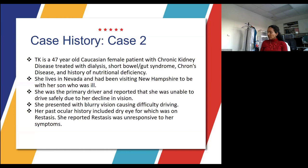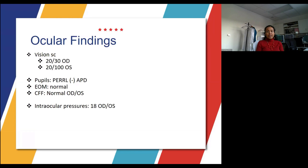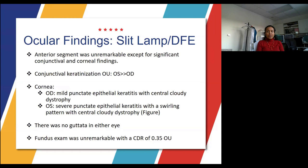Vision on the baseline exam was 20/30 in the right eye and 20/100 in the left eye. Pupils, extraocular muscles, and confrontation fields were all normal, and eye pressures were 18 in both eyes. Her ocular findings included significant conjunctival and corneal changes. The conjunctiva had keratinization in both eyes, worse in the left eye. The cornea showed mild punctate epithelial keratitis with a central cloudy dystrophy in the right eye, and severe punctate epithelial keratitis in a swirling pattern with central cloudy dystrophy in the left eye.